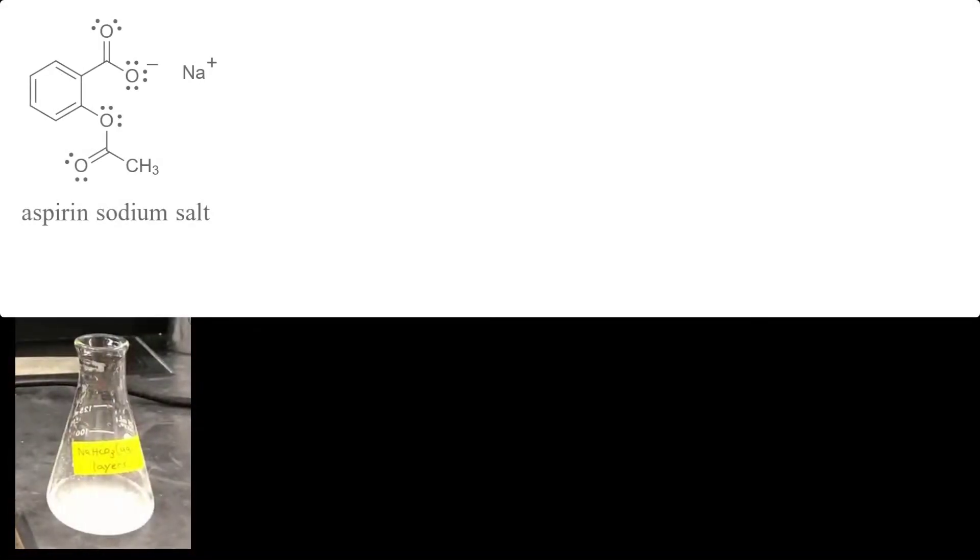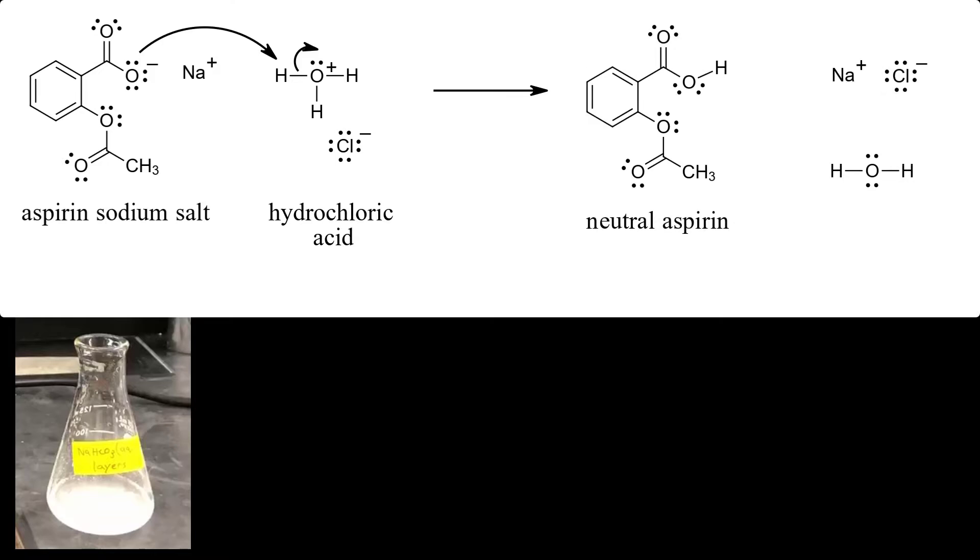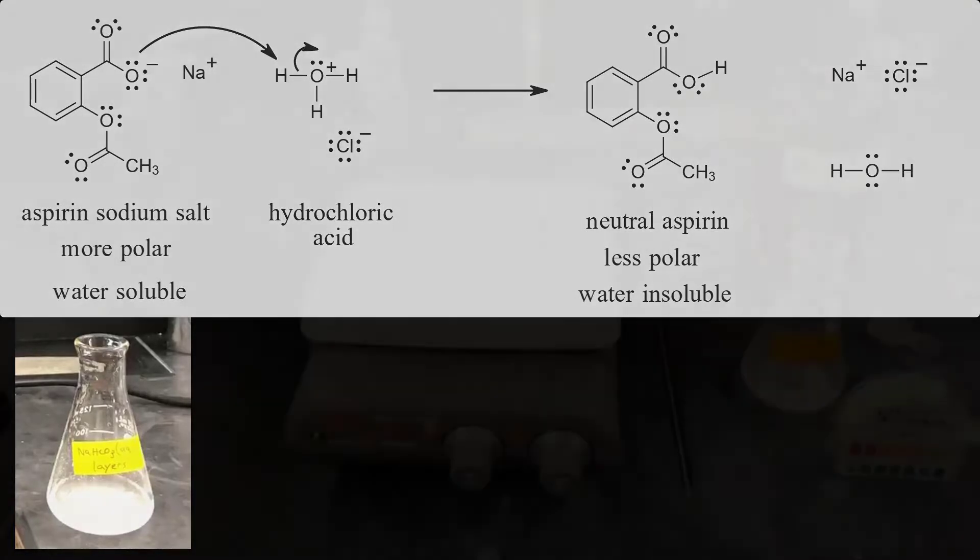This flask contains the sodium salt of aspirin. In the next step, I'll treat it with a solution of hydrochloric acid, which will protonate the aspirin salt and convert it into a neutral species. The sodium salt of aspirin is more polar and water-soluble, while neutral aspirin is less polar and water-insoluble. Therefore, once I have protonated aspirin, it will precipitate and I'll be able to vacuum filter it.